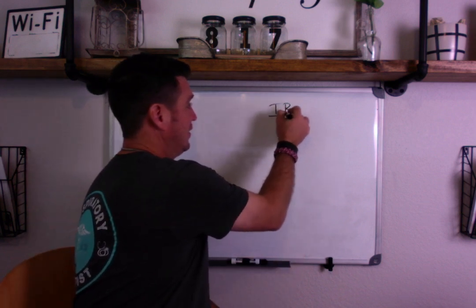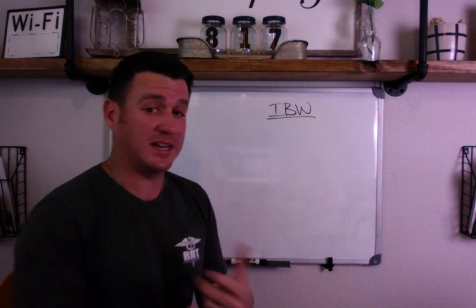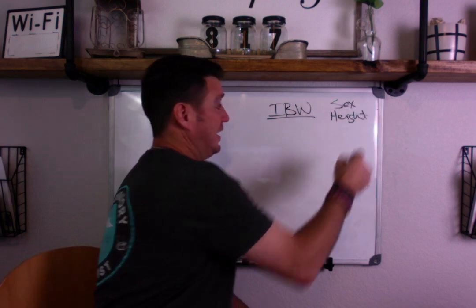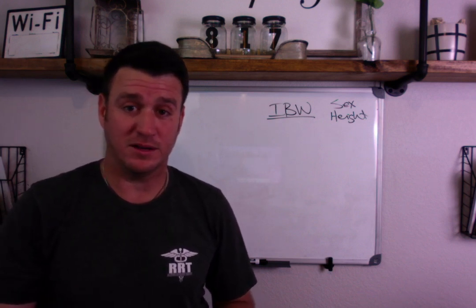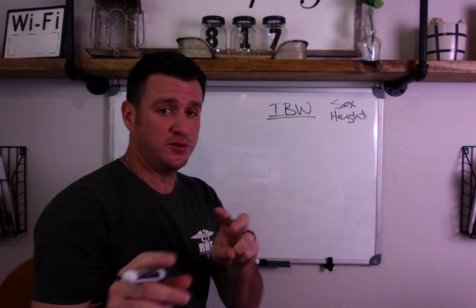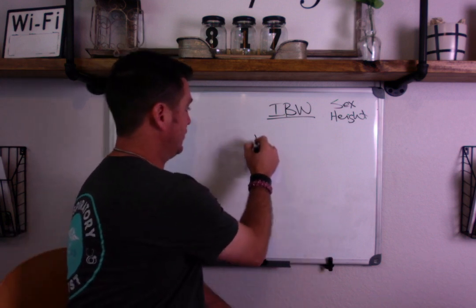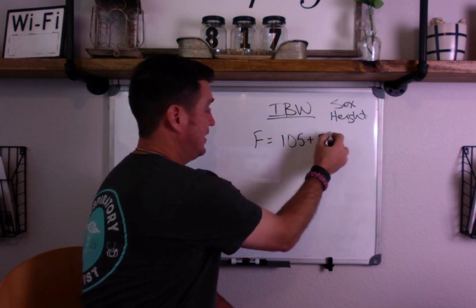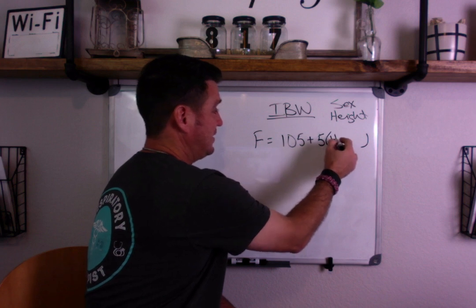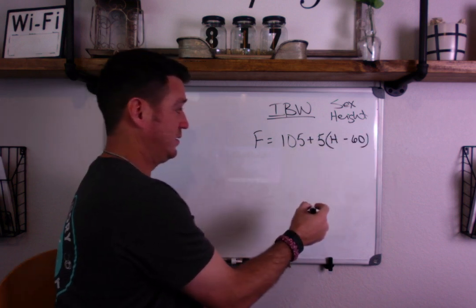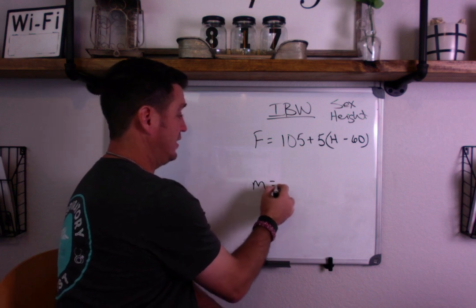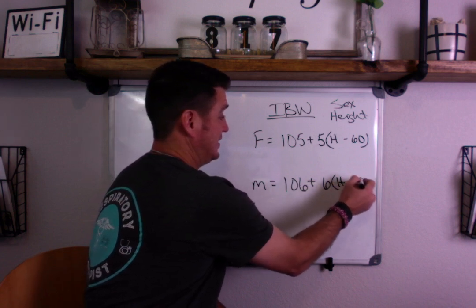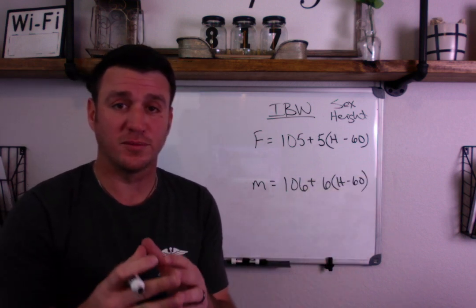We're going to talk first about ideal body weight. Now to understand ideal body weight, you need to know your patient's sex and you need to know their height. Everything is based off of that. So here's the two formulas. There's one for females and there's one for males. So females equals 105 plus 5 times the height minus 60. And for males, it's 106 plus 6 times the height minus 60.